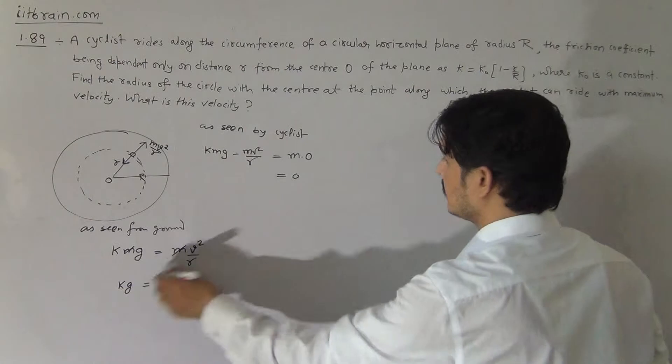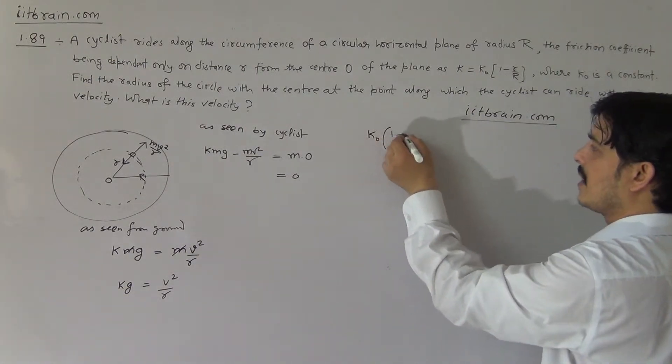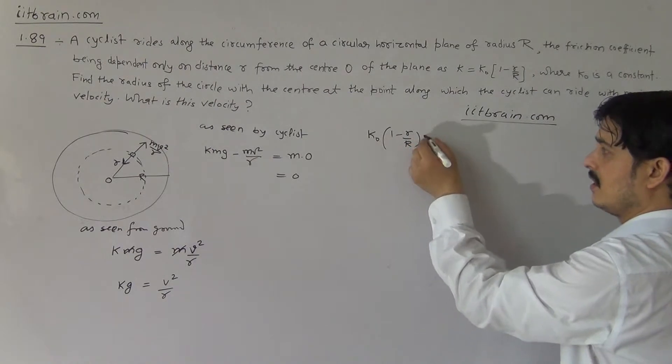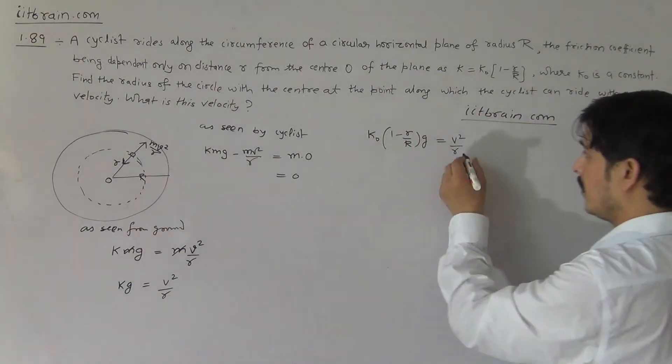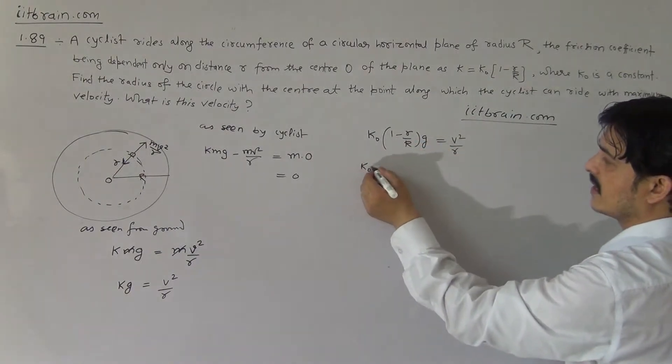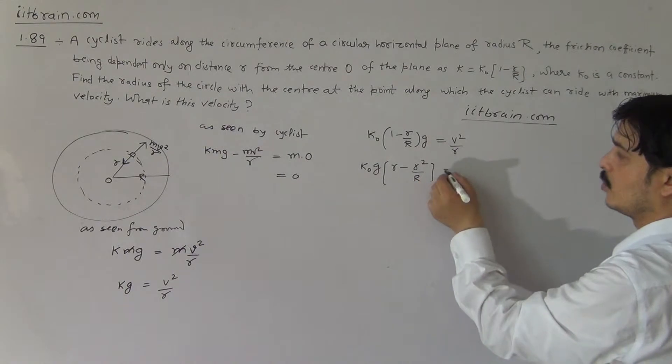Now the value of k is given, so k is k naught times one minus r by R, and this into g equal to v square by r from the condition. Now multiply this r on the left side, you will get k naught g into r minus r square by capital R equal to v square.